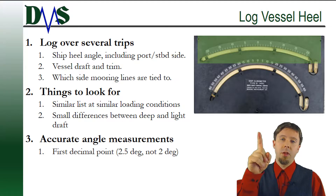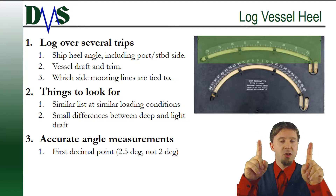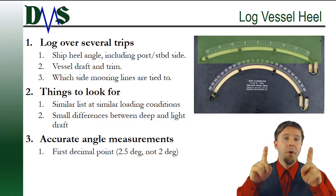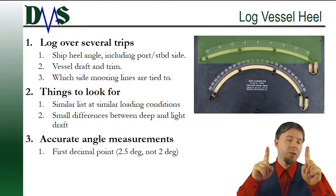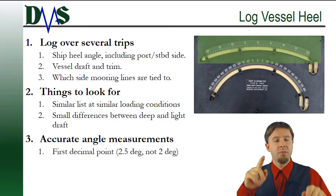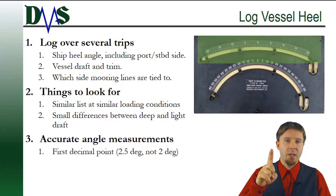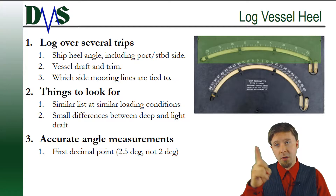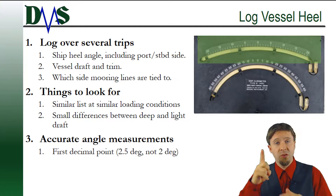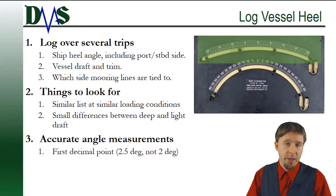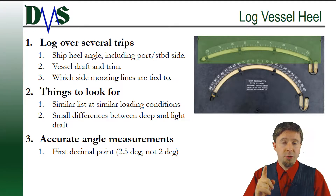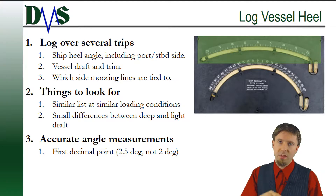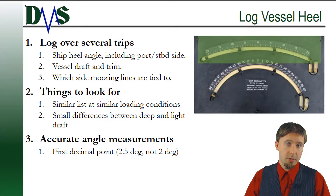You're looking for a similar list angle at similar loading conditions. It's okay if your light loaded condition and your deep loaded condition show different heel angles — that's normal. But they should be similar across multiple voyages. Your heavy loaded condition should always have a similar list. If your heel is always showing at two and a half degrees to starboard, you probably have a list. If you keep flip-flopping between port and starboard, that's not a ship list — that's actually an angle of loll.